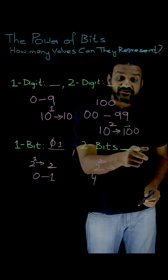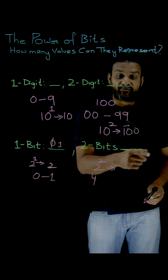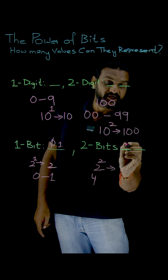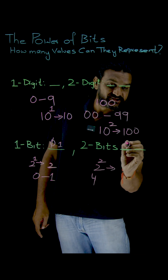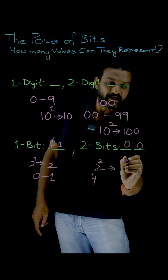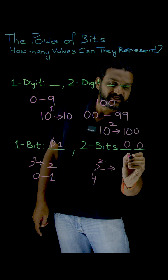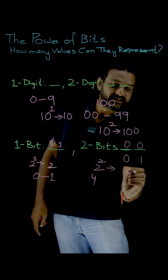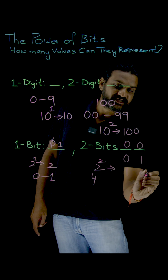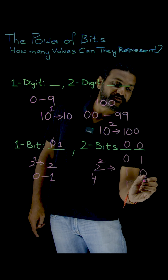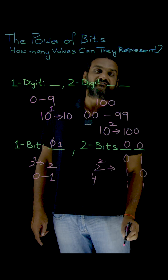So what are those four different numbers? The possibilities are: zero-zero, zero-one, one-zero, and one-one.